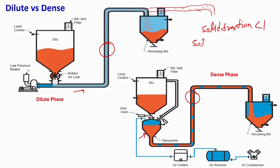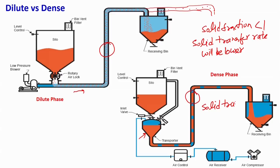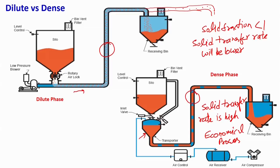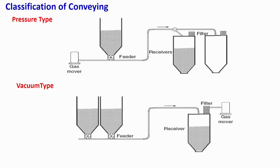In dilute phase, the solid transfer rate will be lower. In the dense phase case, the solid transfer rate is very high, and this is considered economical because we are transferring more and more solids. That is what distinguishes the dense phase and dilute phase regimes.